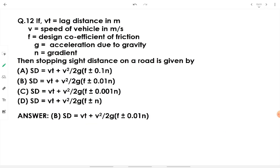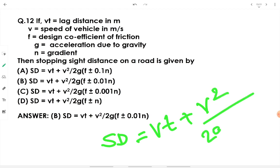If Vt is lag distance, V is speed of vehicle in meters per second, F is design coefficient of friction, g is acceleration due to gravity, and N is gradient, then stopping sight distance on a gradient is given by: SSD = Vt + V² / [2g(F ± 0.01N)], where N is incorporated as a slight modification to the level road formula.